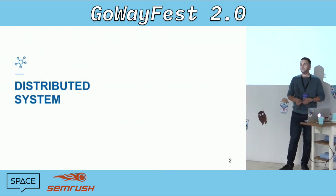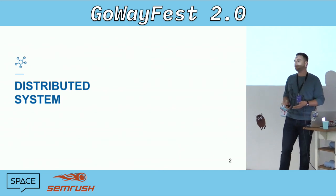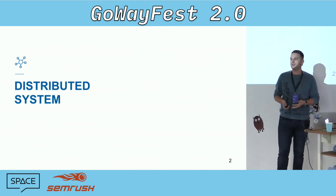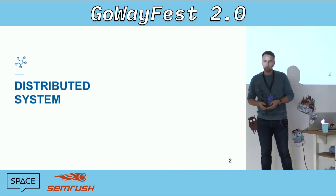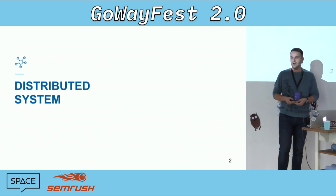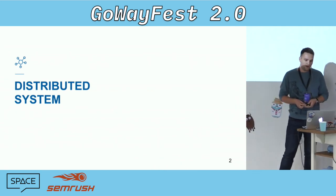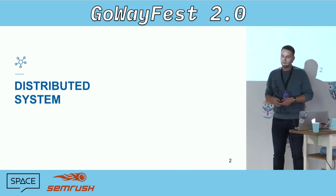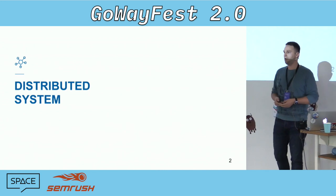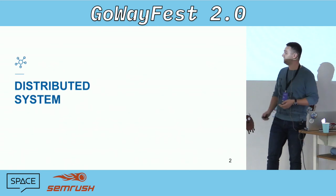We'll begin with the general meaning of the distributed system. The term speaks for itself — it's a distributed system in which nodes communicate with each other by some commands. It could be a communication system or data storage system. A good example of distributed data storage is Consul or CockroachDB, because they both use the Raft consensus algorithm.